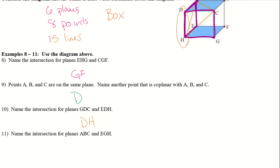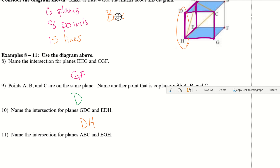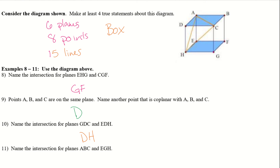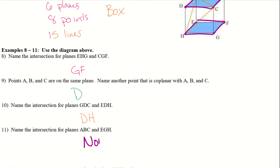Take a look at number 11 — name the intersection for planes ABC and EGH. ABC is up here, and then EGH is down there. These don't have an intersection at all. As you can see, one's on the very top of our box and the other is at the very bottom, so they are never going to touch. There is none for this — they do not have any sort of intersection.